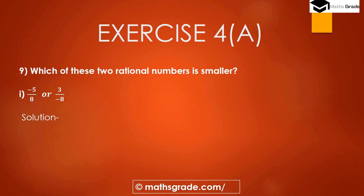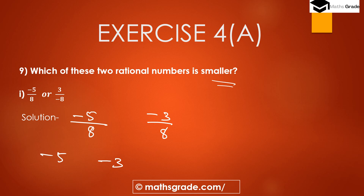Question number 9: which of these two rational numbers is smaller? In question number 8 we found the bigger rational number, but here we have to find the smaller rational number. The first pair is minus 5 divided by 8 and 3 divided by minus 8. We can write 3 divided by minus 8 as minus 3 divided by 8. So we compare minus 5 divided by 8 and minus 3 divided by 8. We look at the numerators: minus 5 and minus 3.